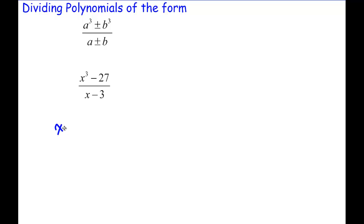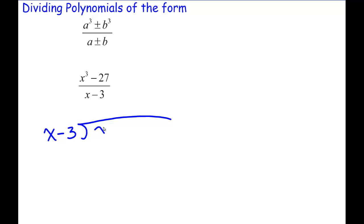So we're going to set up some polynomial division: x minus 3 divided into x cubed minus 27. Now remember, because there are terms missing in this polynomial, it's always handy to put placeholders in for them using a zero coefficient. You want to make sure you have all four terms of this polynomial present so that you can do the proper long division.